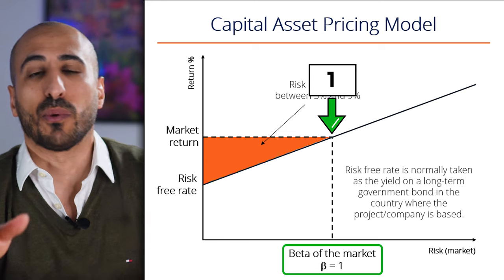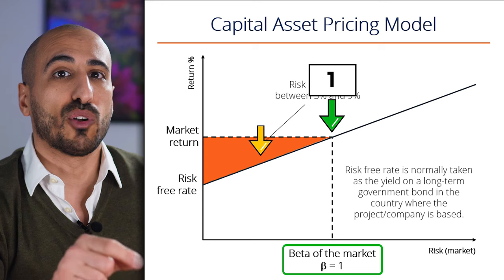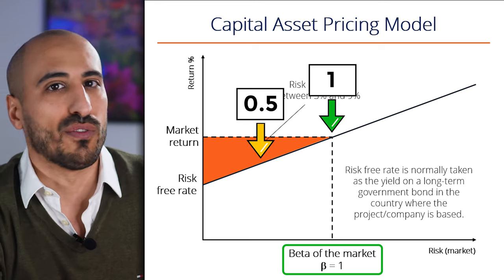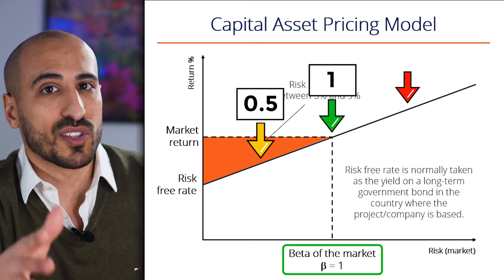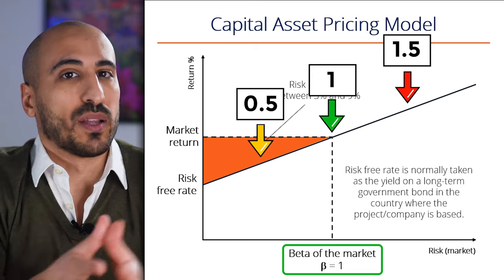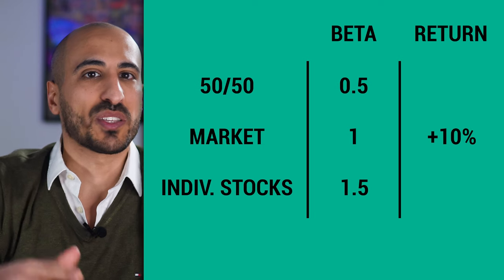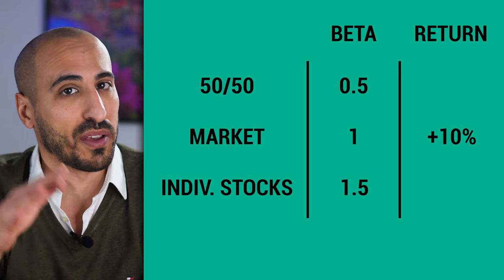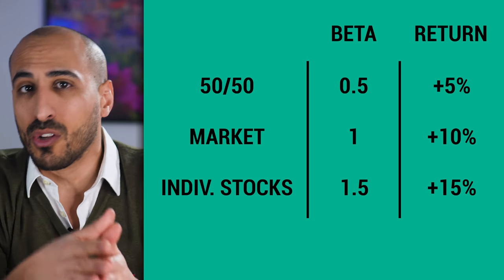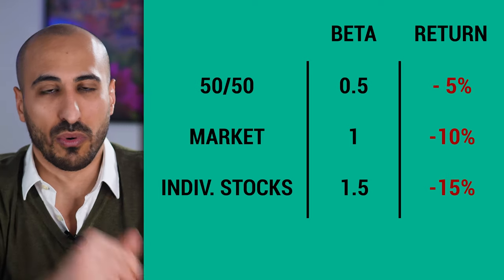For example, a market-cap-weighted index fund like the S&P 500 would have a beta of one, whereas a portfolio of 50% stocks and 50% cash might have a beta of 0.5, and a portfolio of highly risky stocks might have a beta of 1.5. Beta tells us how risky the portfolio is compared to the market. So if the market went up by 10%, we would expect the low-beta portfolio to rise by 5% and a high-beta portfolio to rise by 15%, and the same ratio applies in reverse on the downside.